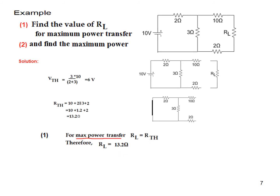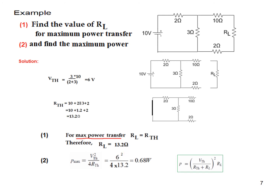The maximum power is found using the formula P_max = V_Thevenin² / (4 × R_Thevenin). With V_Thevenin = 6V and R_Thevenin = 13.2 ohms: P_max = 6² / (4 × 13.2) = 0.68 watts. You can also use the general formula and get the same answer.